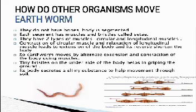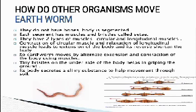How do other organisms move? We will first discuss the earthworm. They do not have bones, and their body is segmented. Each segment has muscles and bristles called setae. They have two types of muscles: circular and longitudinal. Contraction of circular muscles and relaxation of longitudinal muscles leads to extension of the body, and the reverse shortens the body. The earthworm moves by alternate extension and contraction of the body using muscles. Tiny bristles on the underside grip the ground, and the body secretes a slimy substance to help movement through soil.